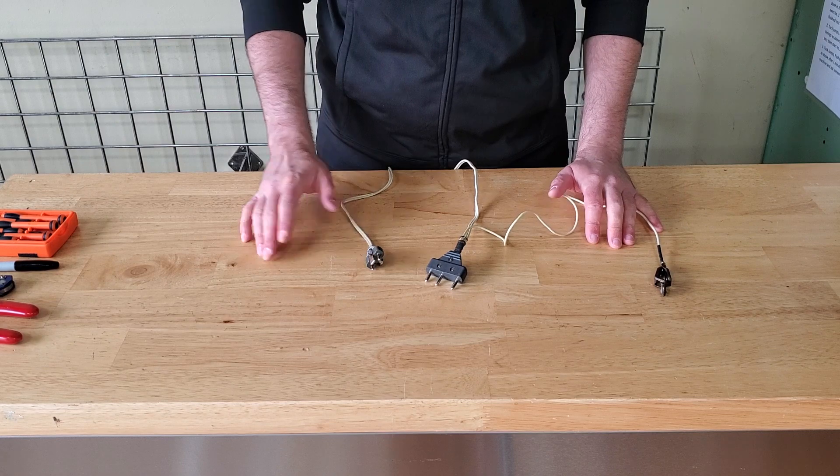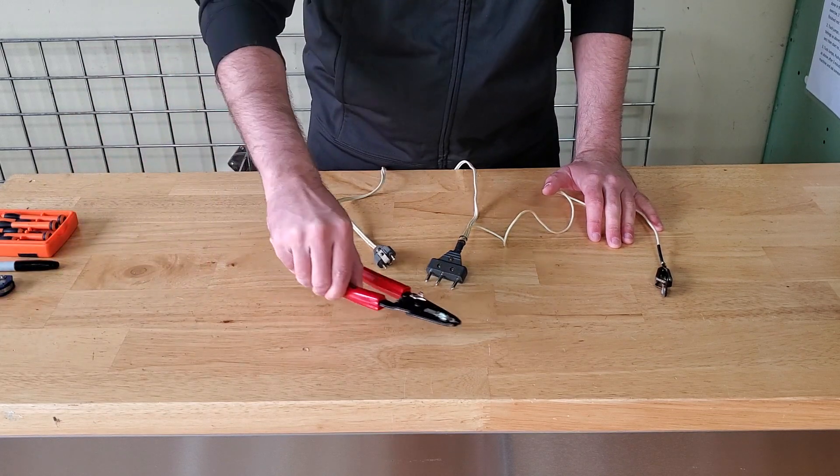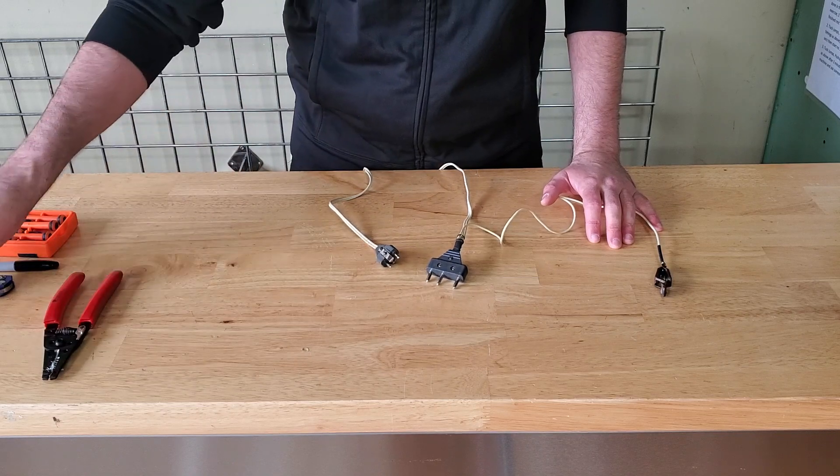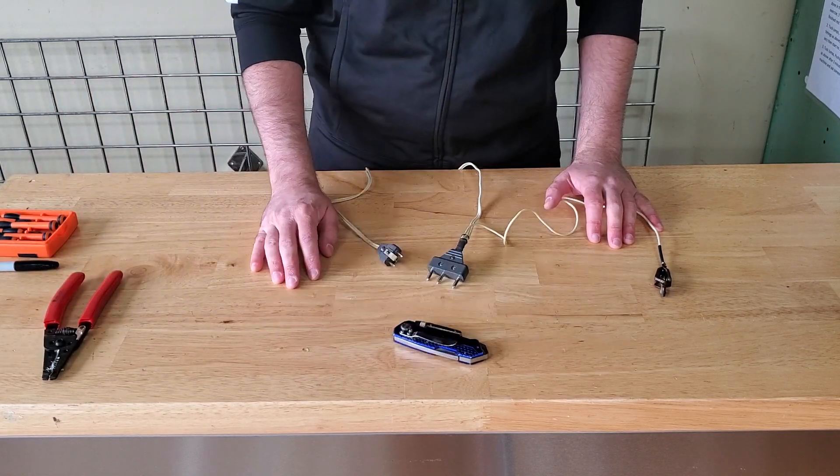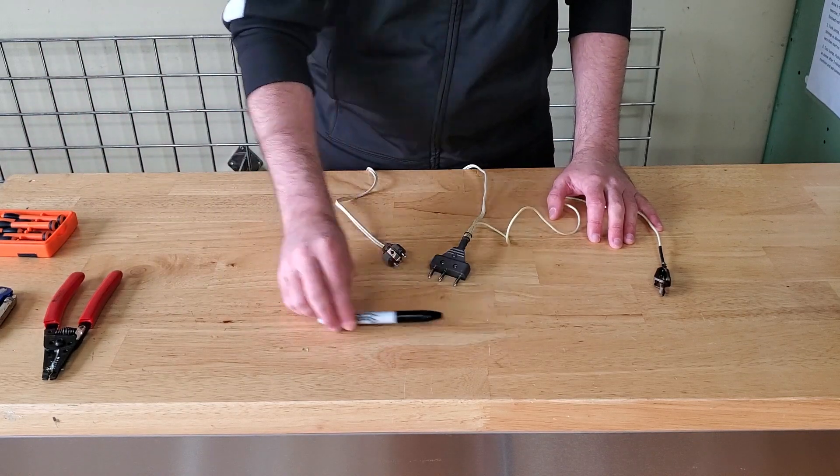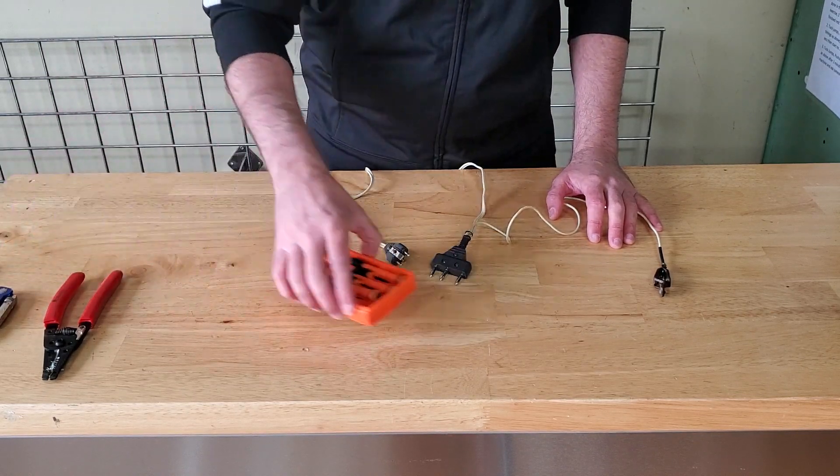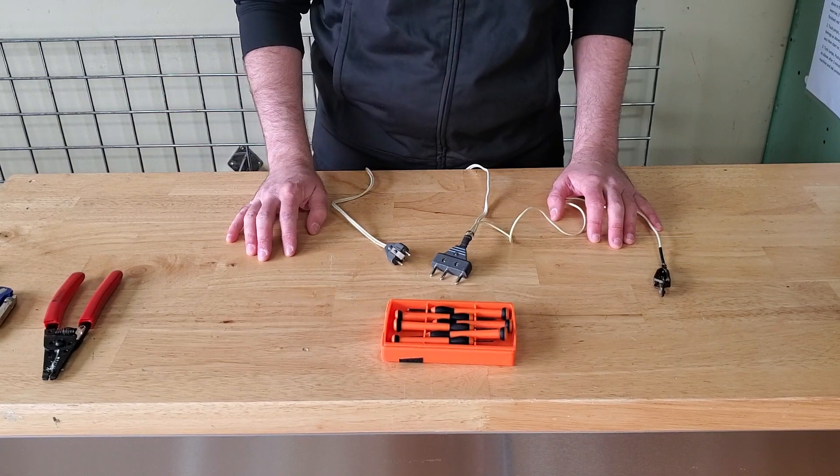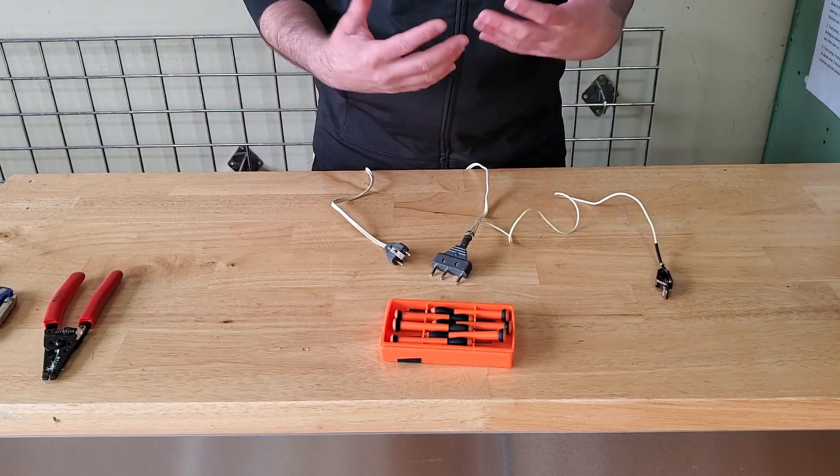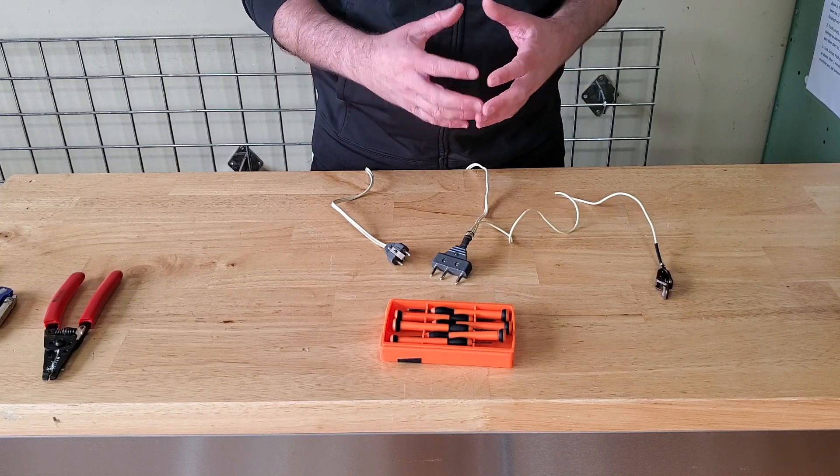So before we begin, we have to talk a little bit about the tools that we're going to need. We're going to need some wire strippers, a razor knife, a permanent marker, and some tiny screwdrivers. These are precision screwdrivers, but jewelers screwdrivers or glasses screwdrivers are really what you need.